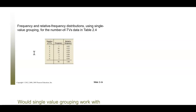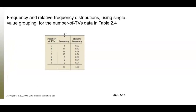Your tally for the TV data should give you a frequency column — zero through six — showing how many households had each number of TVs, which should always total our sample size of 50. Then we calculate relative frequency by dividing each frequency by 50. This one happens to add up to 1, but depending on how you rounded it could be 0.99 or 1.01. This is a basic frequency table for single value grouping.